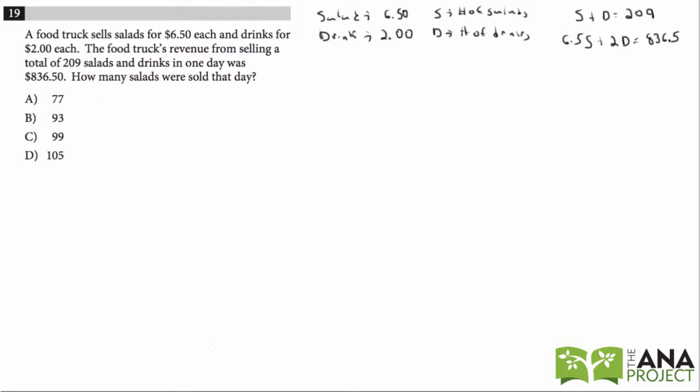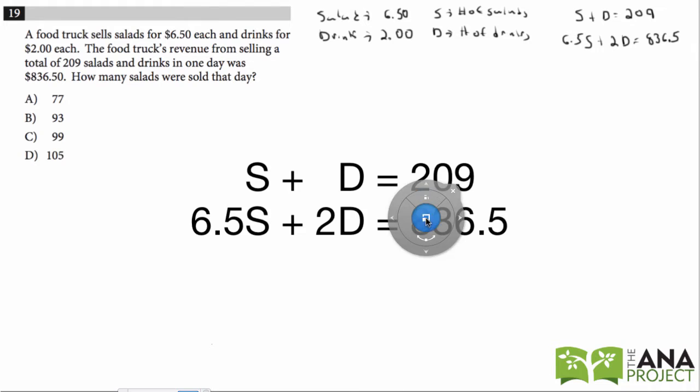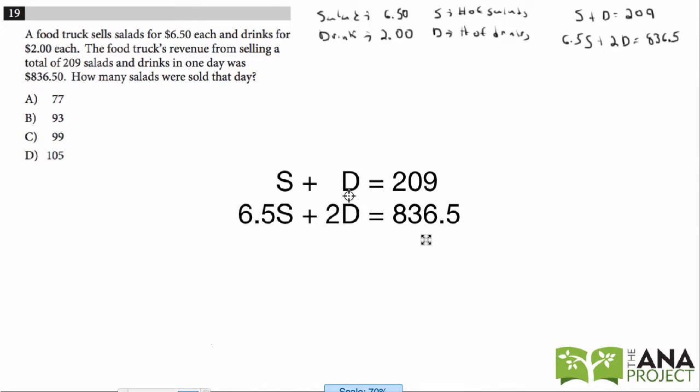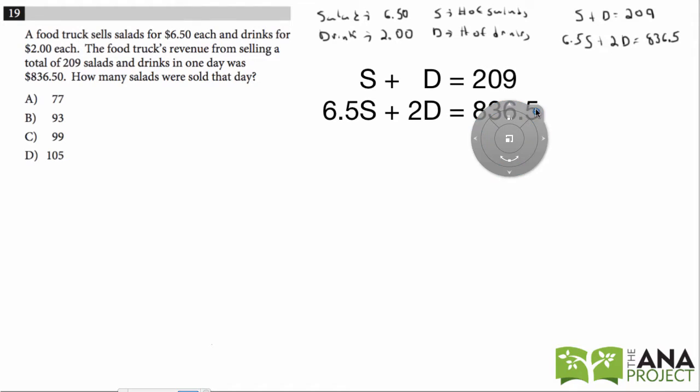One, we can use the answer choices. Let me copy and paste the equations here. Here again, the number of salads plus the number of drinks equals 209, and $6.50 times the number of salads plus $2 times the number of drinks will equal $836.50.